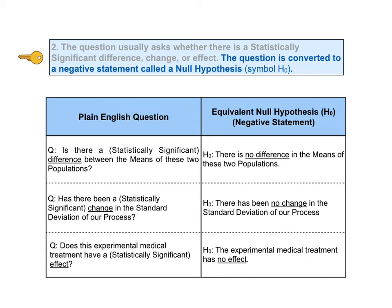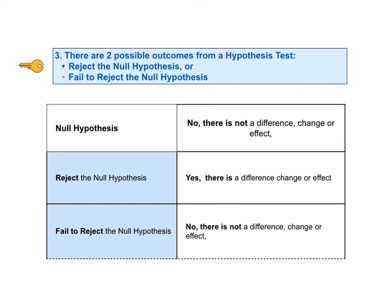For example, the question "Is there a difference?" becomes the null hypothesis "There is no difference." The question "Has there been a change?" becomes the null hypothesis "There has been no change." The question "Does this treatment have an effect?" becomes the null hypothesis "This treatment does not have an effect." After we conduct a hypothesis test, we come to a conclusion about the null hypothesis — we either reject it, or we don't. But instead of saying that we don't, the language of hypothesis testing says that we fail to reject the null hypothesis.